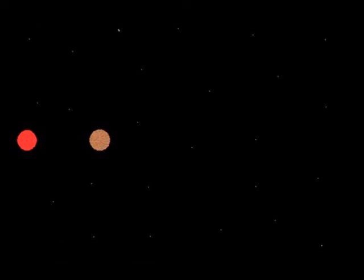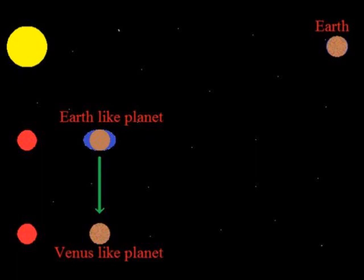Thus producing a Venus-like planet. The result is that so-called Earth-like planets orbiting red dwarf stars are hardly Earth-like. These planets are more like Venus and totally hostile to life.